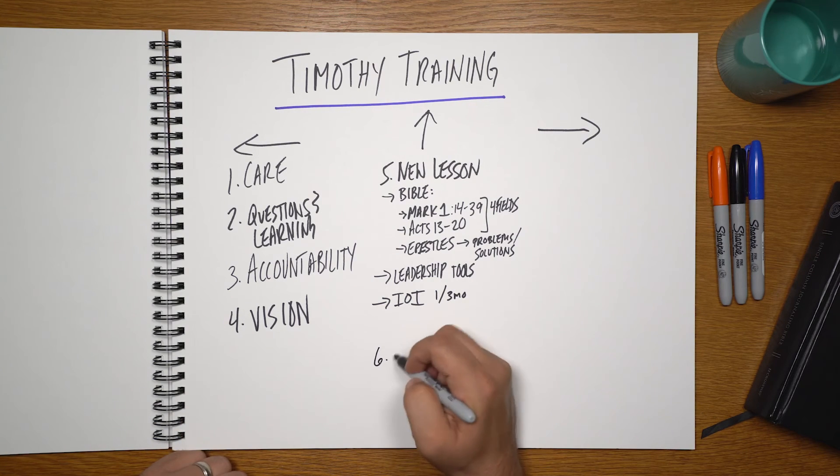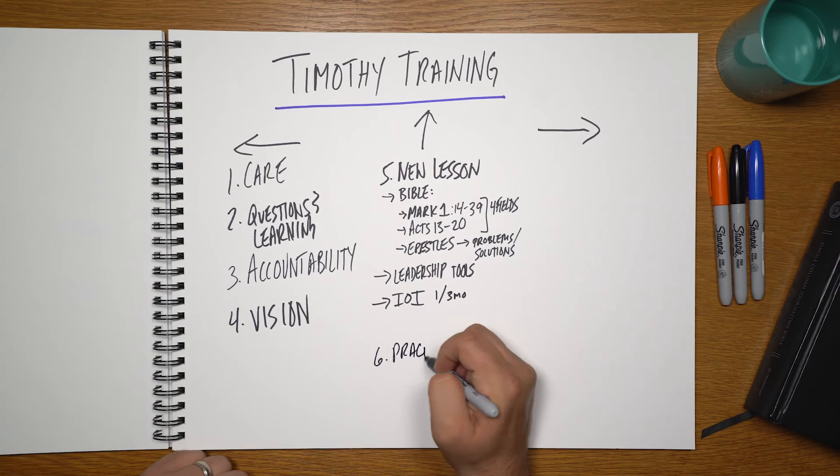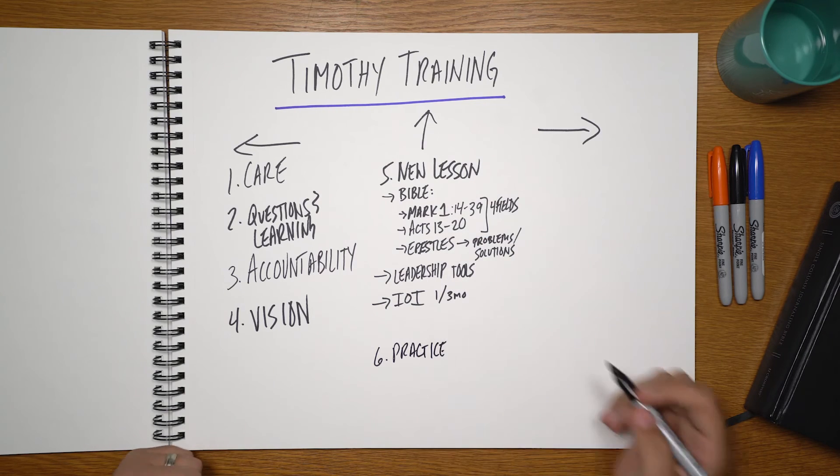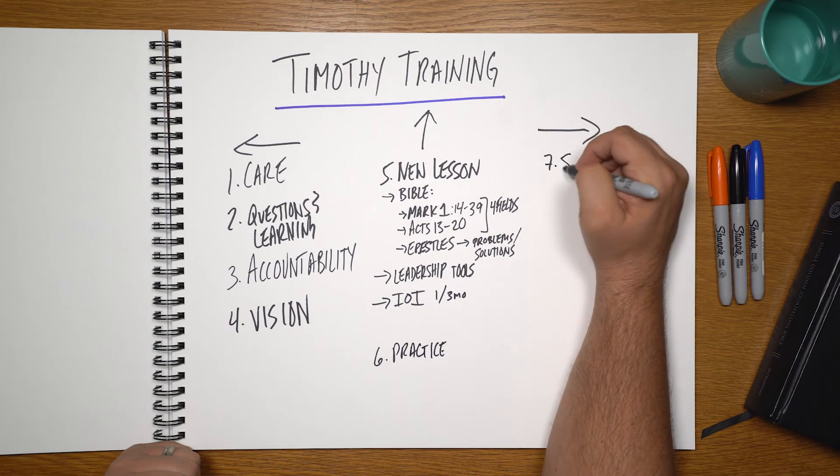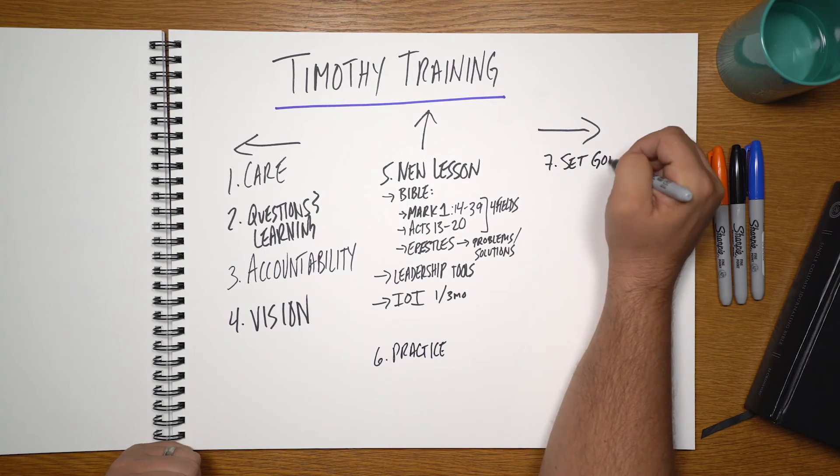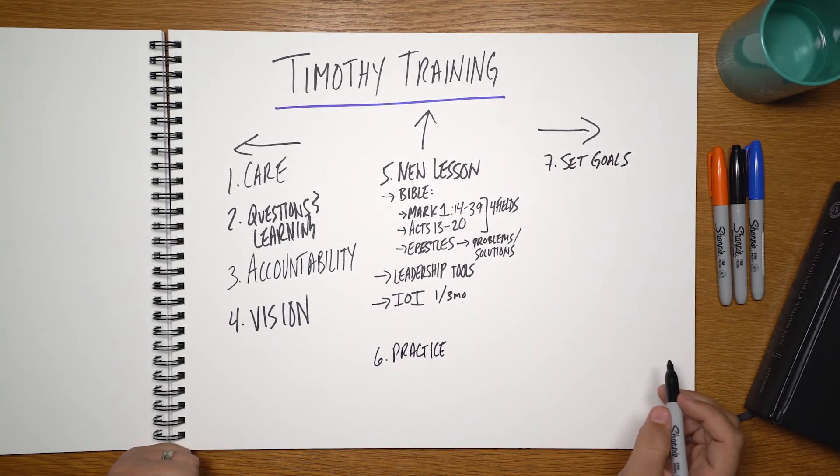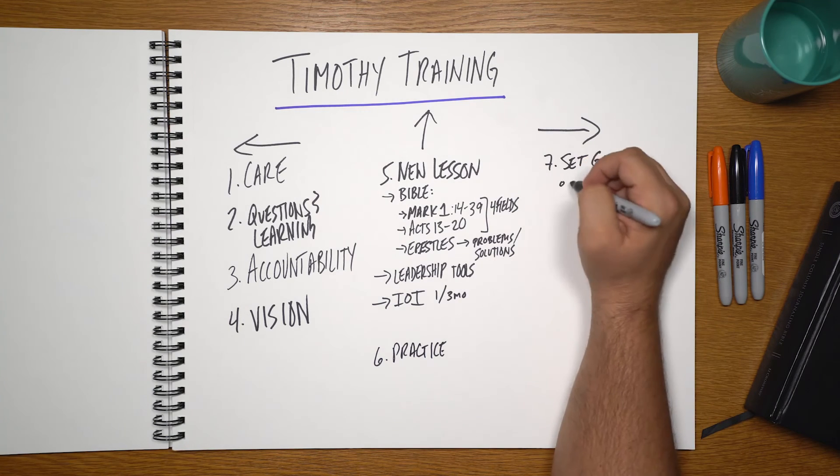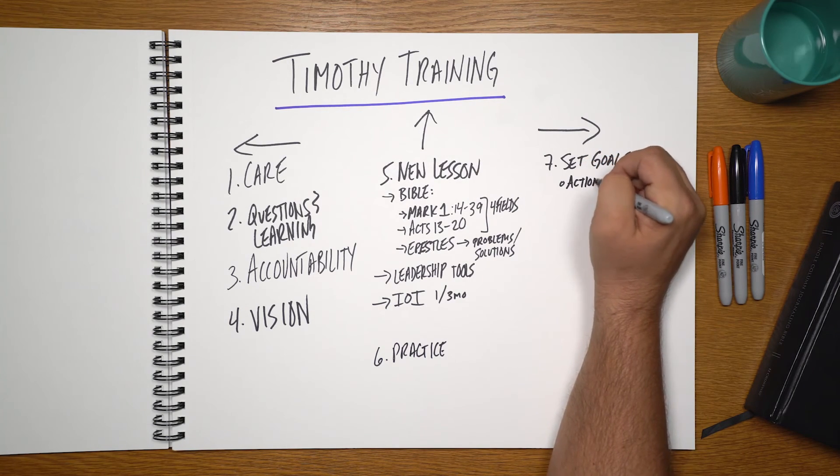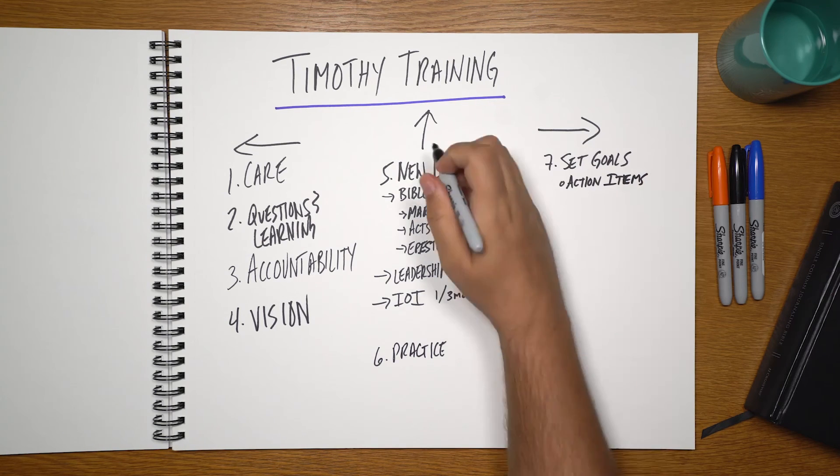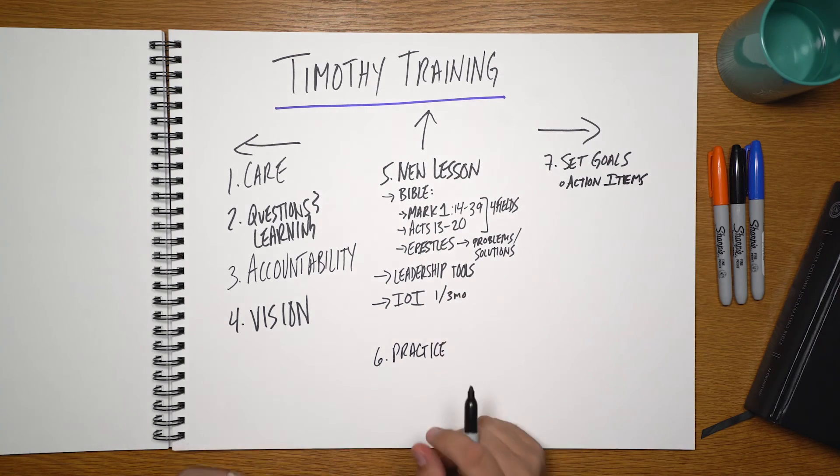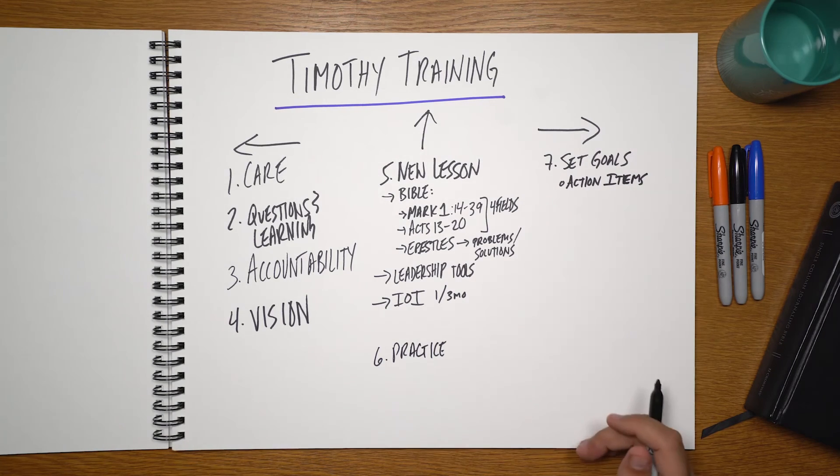And then if there is a tool to practice, you obviously want to practice whatever tool you introduce. But then we're moving on and we're setting goals more specific to the strategies. So what are some action items related to your strategy? We'll typically finish up the new lesson time and just say, hey, what did you learn? Any takeaways and what are your action items?